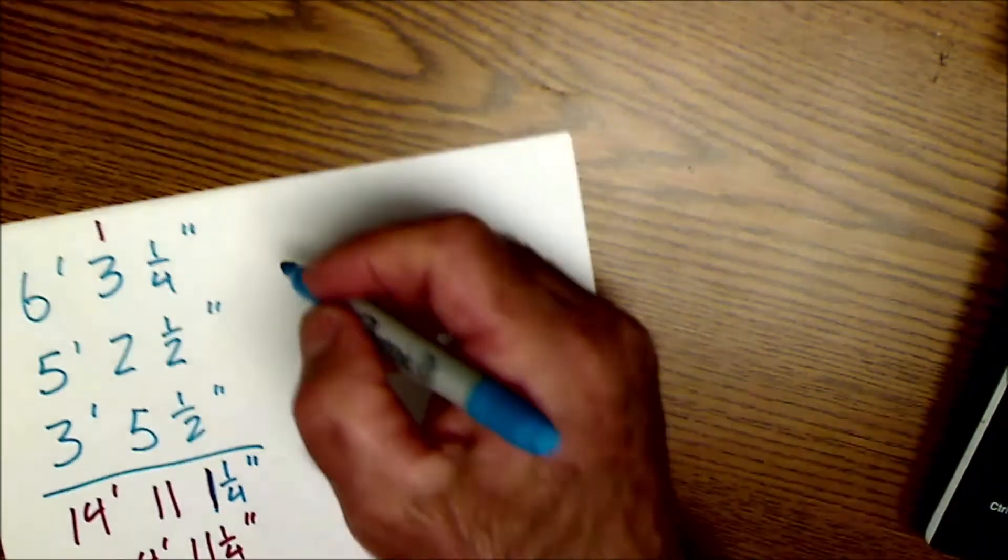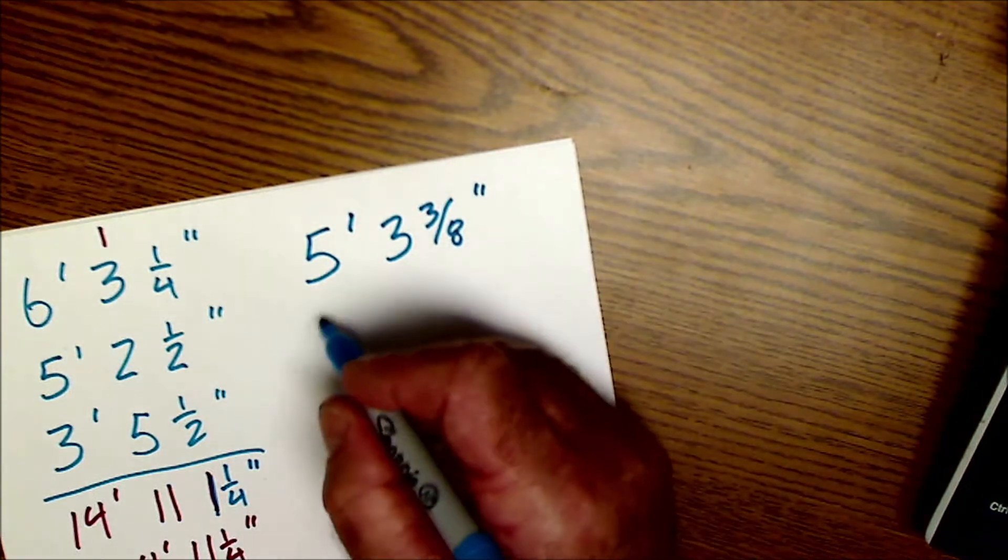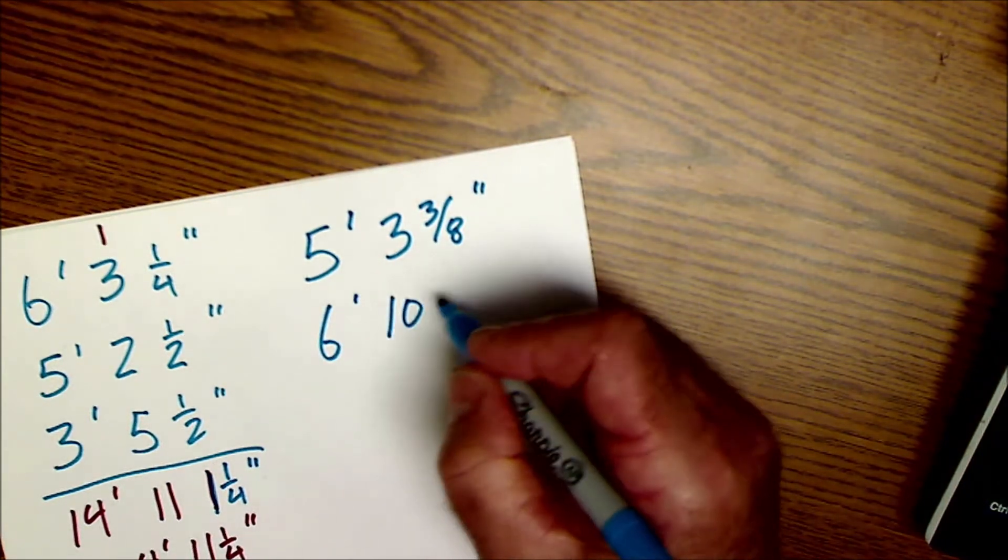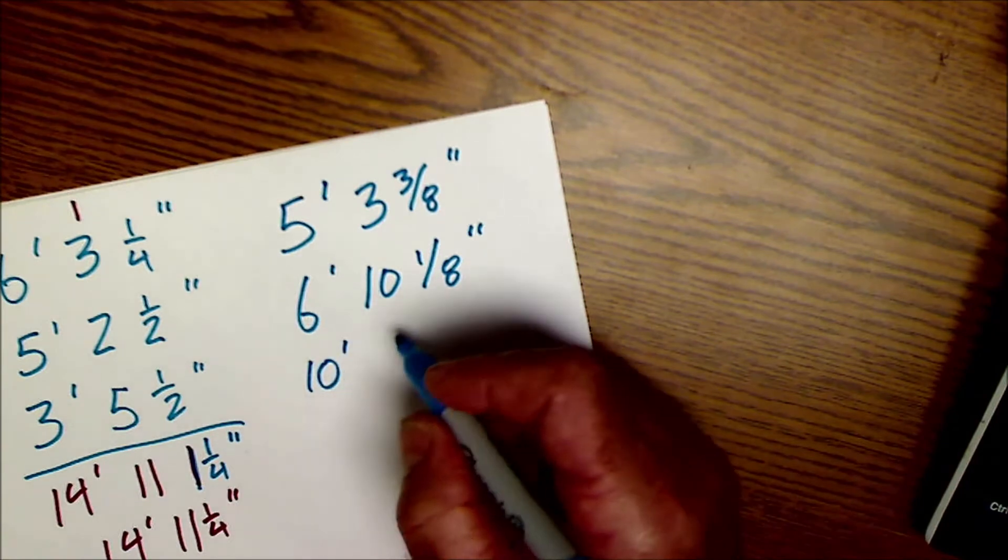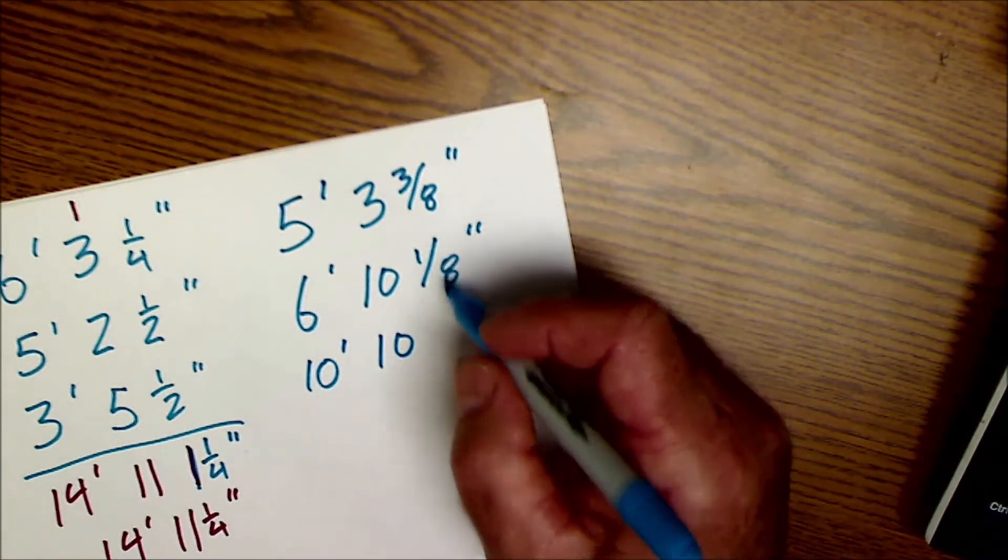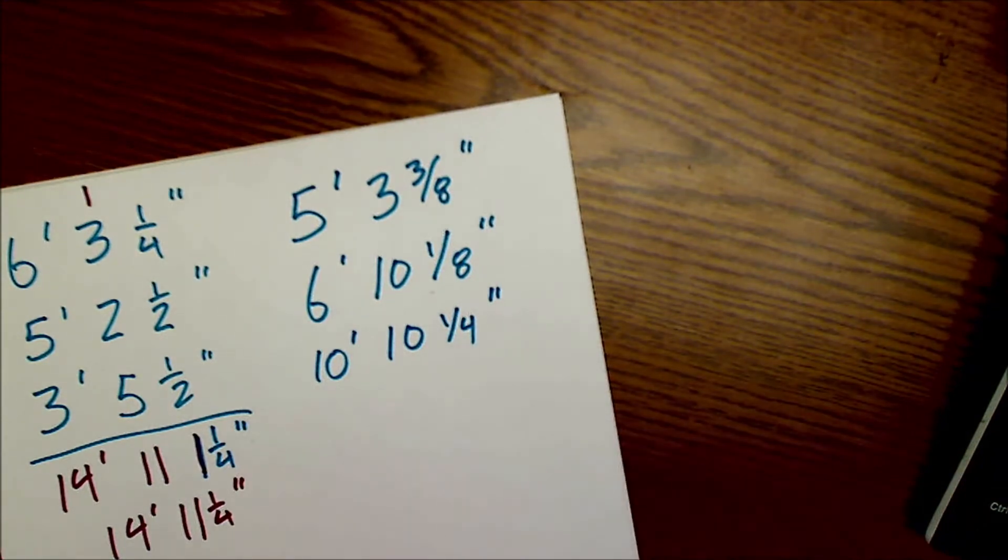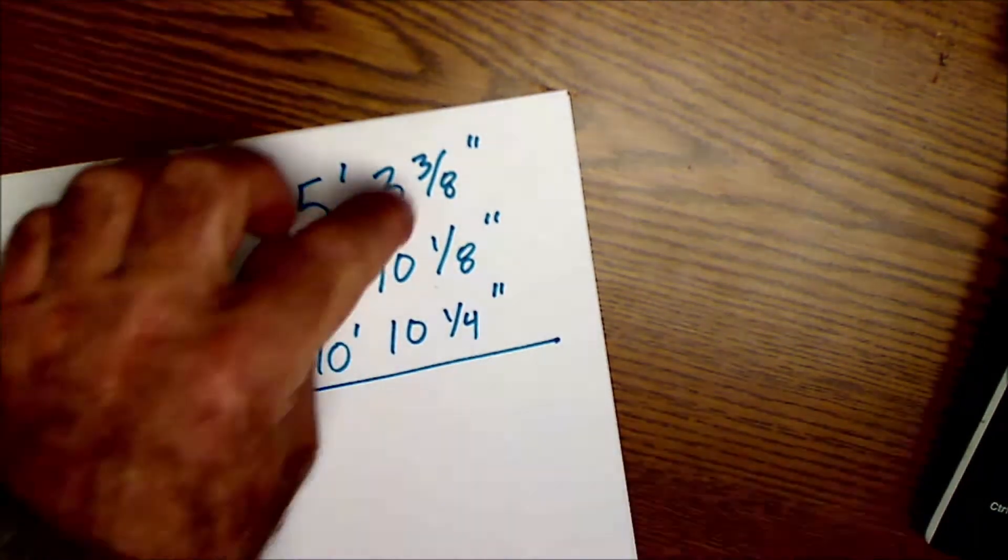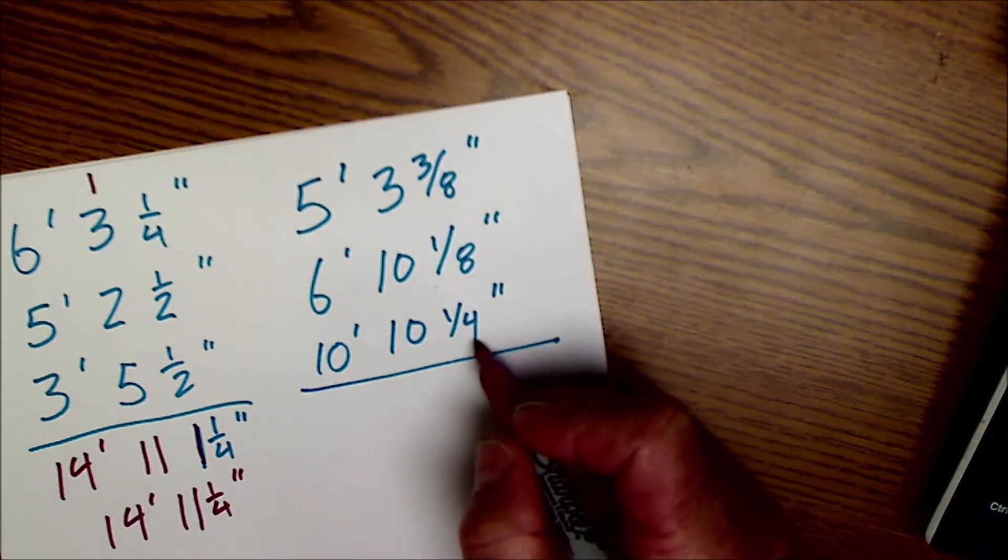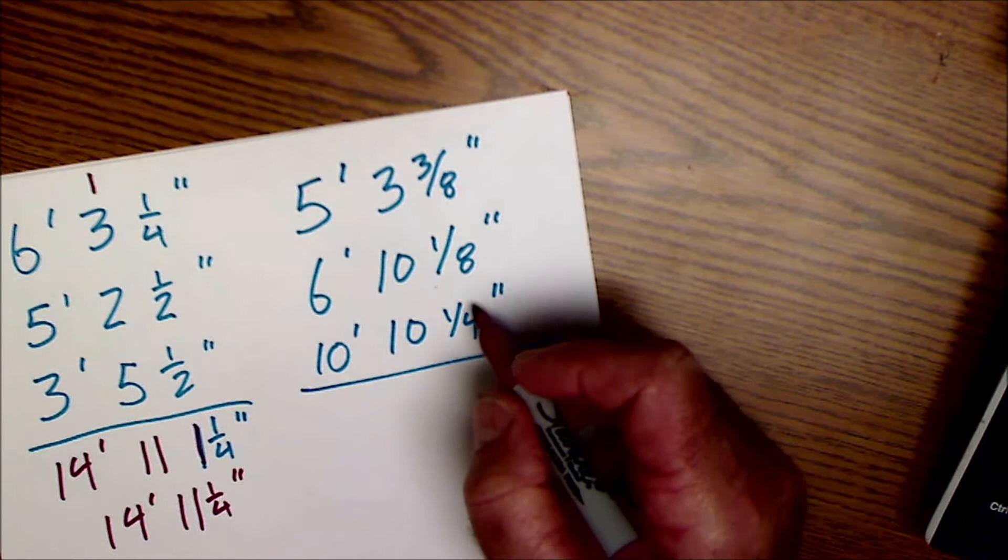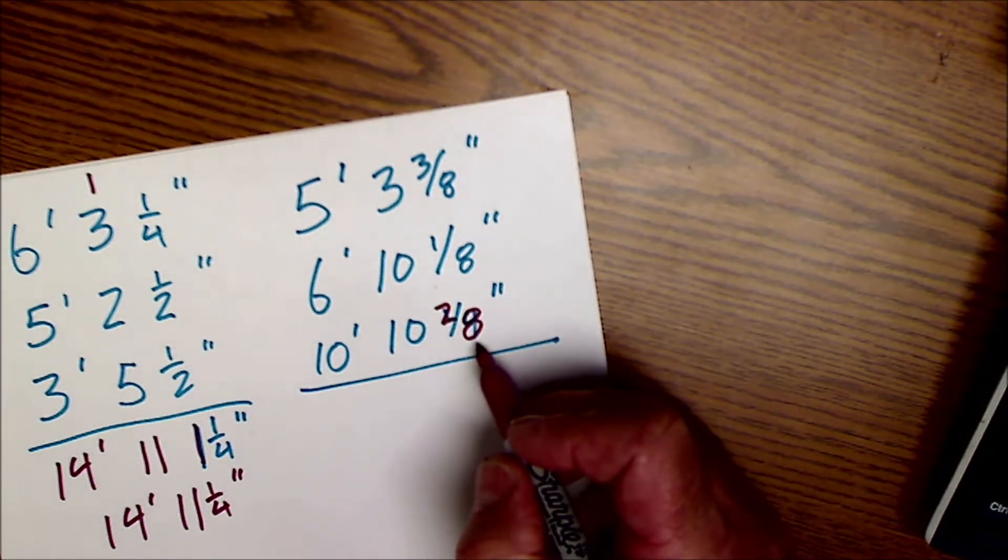Pause the video right here and do this problem yourself. So say I have 5 feet 3 and three eighths of an inch, I have 6 feet and 10 and one eighth of an inch, and I have 10 feet 10 and let's do a quarter of an inch. Okay so before I add fractions I have to have a common denominator. So that common denominator is going to be an eighth. This one has to go to an eighth. So to make this an eighth I got to multiply it by a two over a two. So this becomes two eighths.